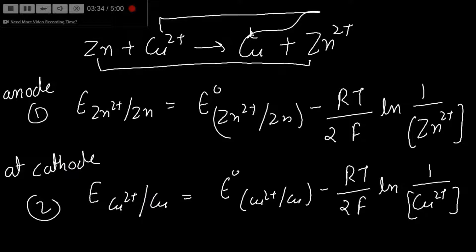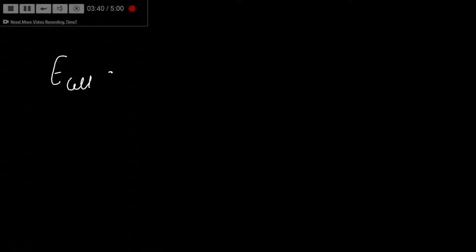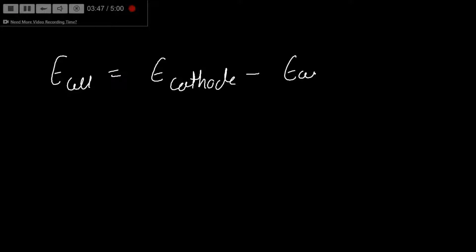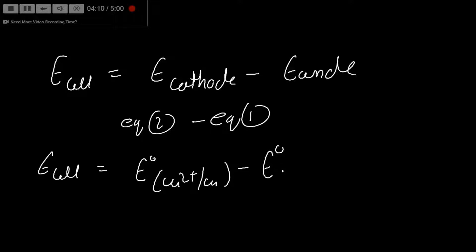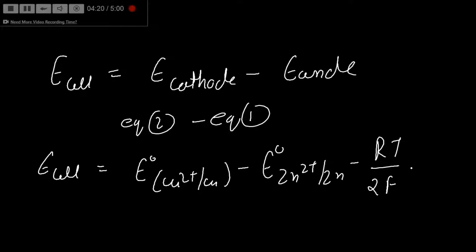We know that cell potential equals potential of cathode minus potential of anode. So I subtract equation one from equation two. This gives: E_cell = E°(Cu²⁺/Cu) minus E°(Zn²⁺/Zn) minus (RT / 2F) times ln(...).